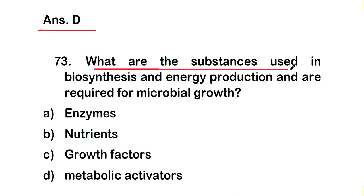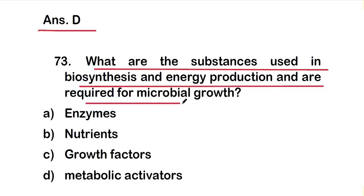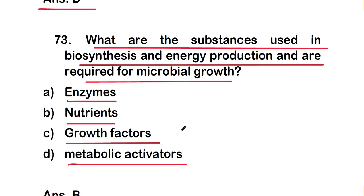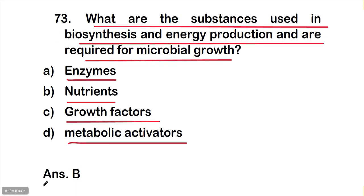Question number 73: What are the substances used in biosynthesis and energy production that are required for microbial growth? Options are: A) enzymes, B) nutrients, C) growth factors, D) metabolic activators. The right answer is option B — nutrients are the substances used in biosynthesis and energy production required for microbial growth.